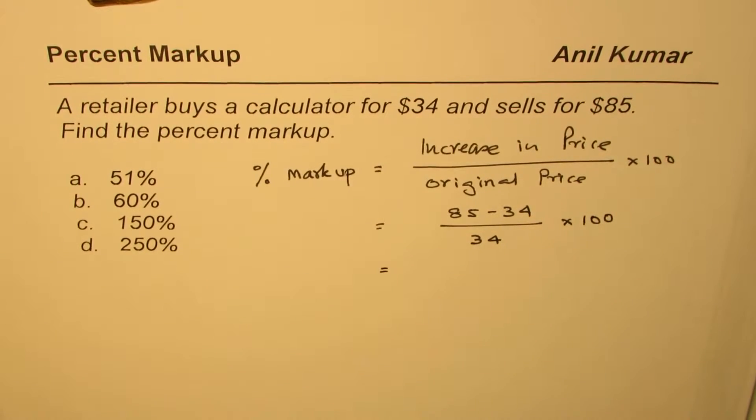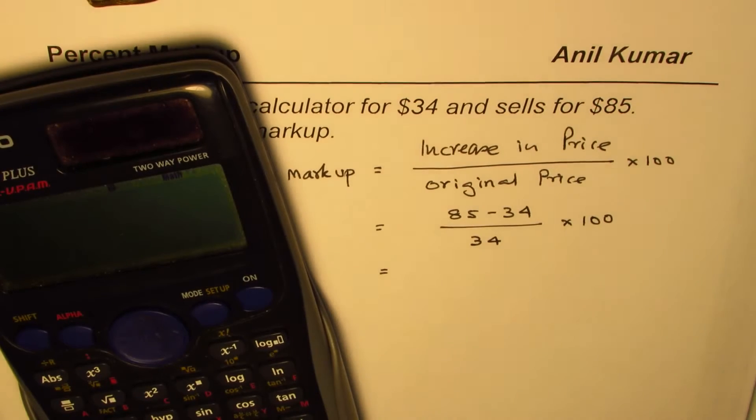Let's calculate. We have 85 minus 34 divided by 34 times 100.